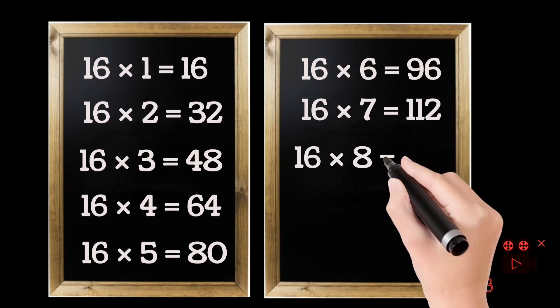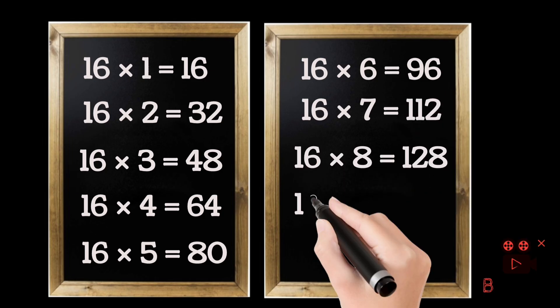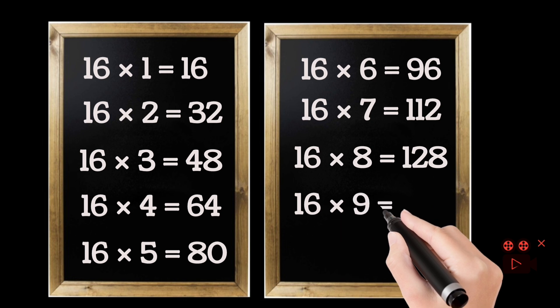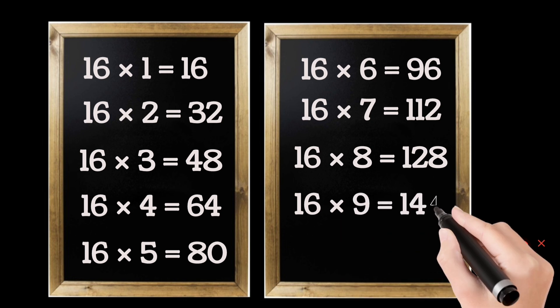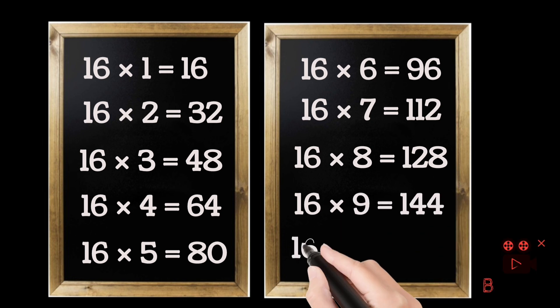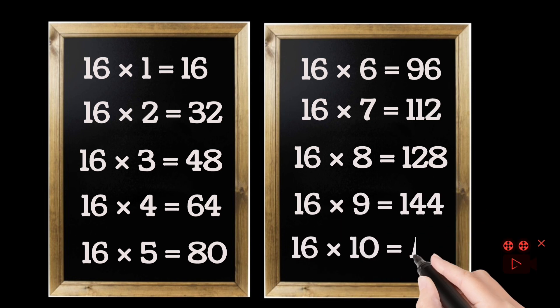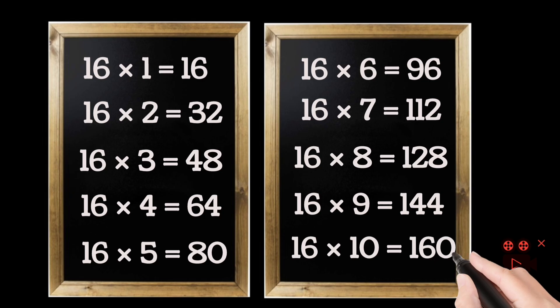16 eights are 128. 16 nines are 144. 16 tens are 160.